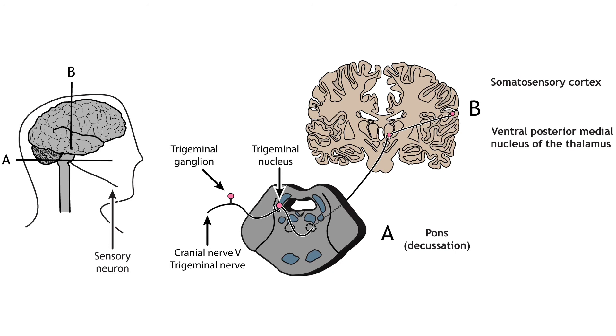Sensory receptors in the face and head send info to the brain via cranial nerve 5, the trigeminal nerve. The first-order neurons have their cell bodies in the trigeminal ganglion, located just outside of the brain stem, and they project to the ipsilateral trigeminal nucleus in the pons. Second-order neurons cross the midline and project up to the ventral posterior medial nucleus of the thalamus. These neurons then send projections to the face region of the somatosensory cortex. This pathway is called the trigeminal pathway.